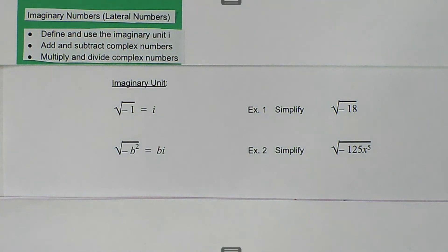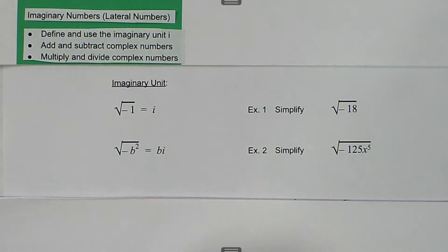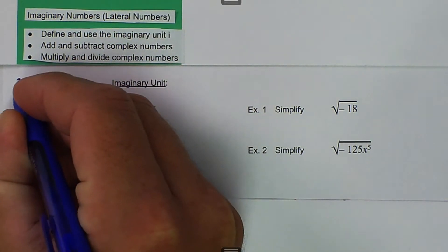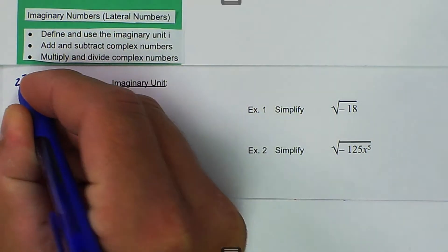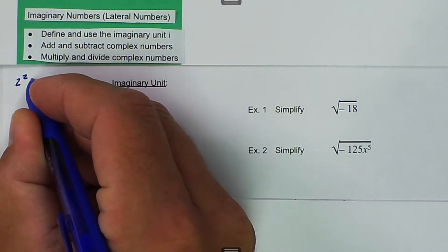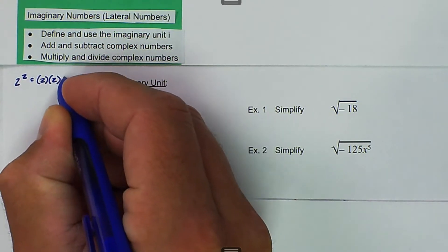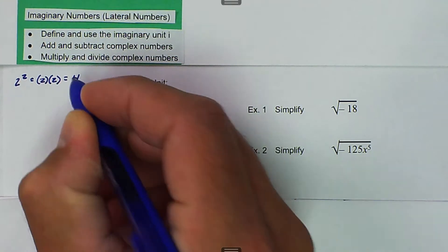We are talking about imaginary numbers, or lateral numbers, and we want to define and use the imaginary unit i. So we have to understand a little bit about where that comes from. We all know that if we say 2 squared, that's the same thing as saying 2 times 2, and that is equal to 4.